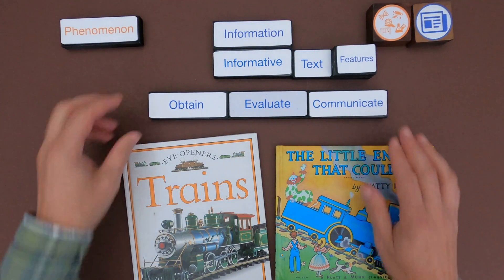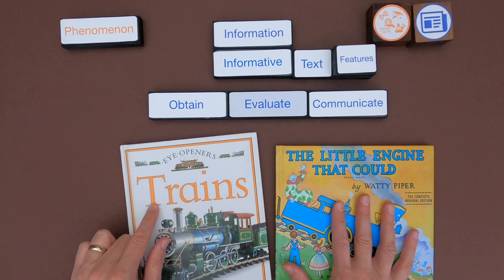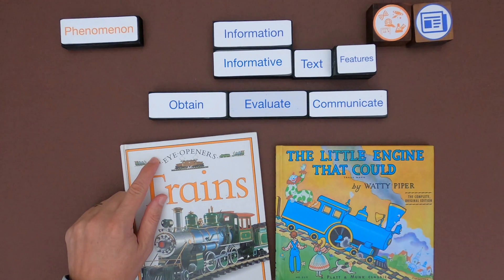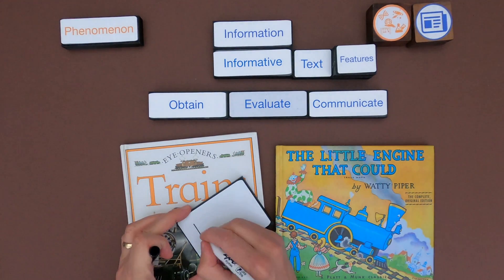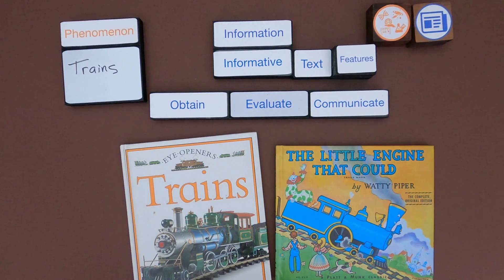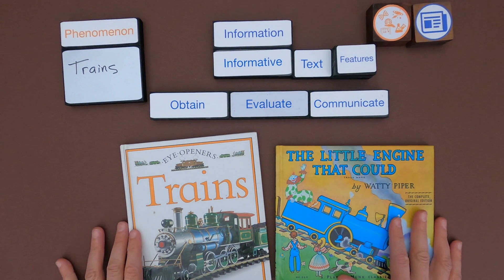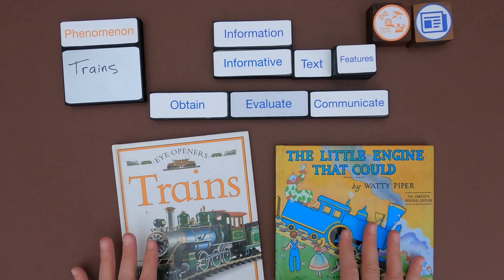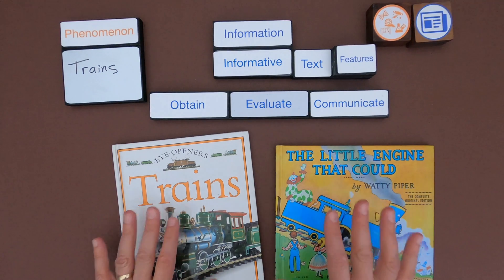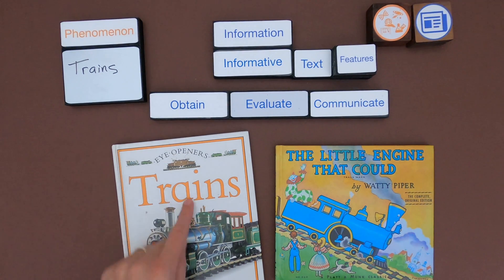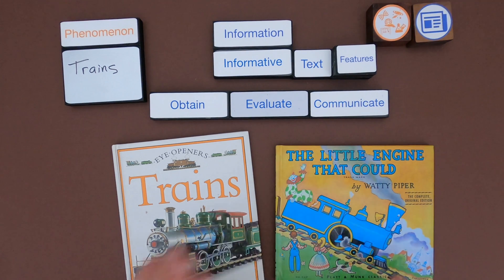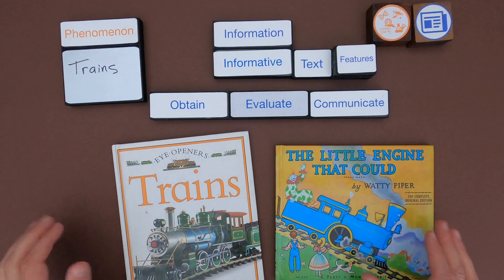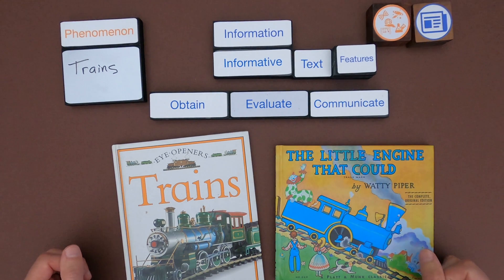For the next one, you can see I've got a couple of texts. One's called 'Trains' by Eye Openers, and another is 'The Little Engine That Could.' Let me define what the phenomena is. I'd love to have you pause the video, identify if one or both of these are informative texts, then obtain some information you think is interesting, evaluate that information, and then communicate it. Then unpause and we'll see how our thinking compares. I'll link up sections of these books down below so you can use those.